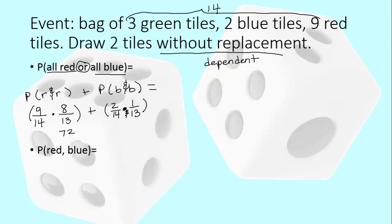Now let's figure it out. So we've got 72 over 182 plus 2 over 182. So all together it's 74 out of 182. And that can be reduced by 2. All right, let's look at the second problem.